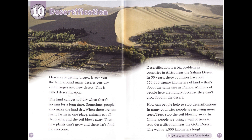Chapter 10: Desertification. Deserts are getting bigger — every year, land around many deserts gets dry and changes into new desert. This is called desertification. The land can get too dry when there's no rain for a long time. Sometimes people also make the land dry: when there's no rain for farms, animals eat all the plants, the soil blows away, new plants can't grow, and there isn't food for everyone. Desertification is a big problem in countries in Africa near the Sahara Desert — in 50 years, these countries have lost 650,000 square kilometers of land, about the same size as France.